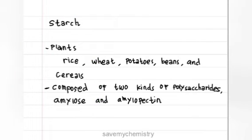Starch. Starch is a storage form of glucose in plants found in rice, wheat, potatoes, beans, and cereals. Starch is composed of two kinds of polysaccharides: amylose and amylopectin.